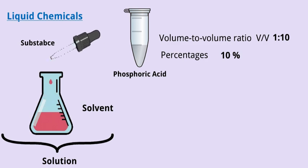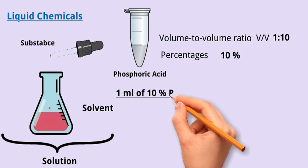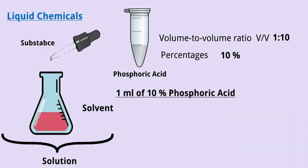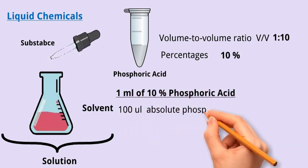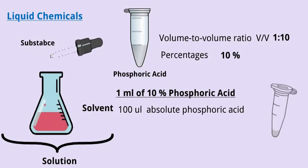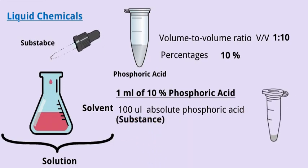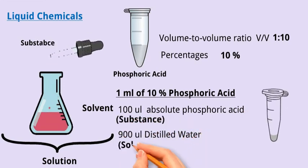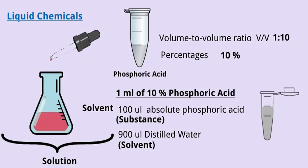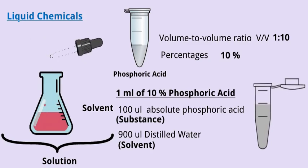So if you were asked to prepare a solution of 1 ml of 10% phosphoric acid, then you should take 100 microliters of absolute phosphoric acid, that is your substance, and add to it 900 microliters of your solvent, for example distilled water. So when we deal with liquid chemicals, we express in the volume to volume ratio, in this case 1 to 10, or by percentage like 10%.